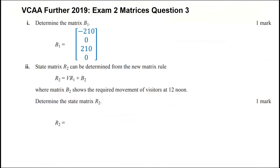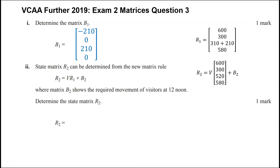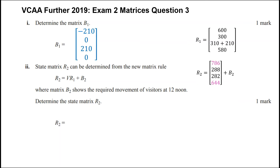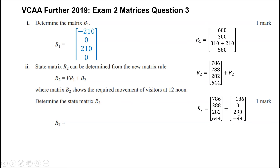In part 2, we go one step further and calculate state 2. We had state 1 and now apply the transition matrix again — multiplying it out on the CAS calculator. Then we consider what happens to people exceeding 600. Matrix B2 reflects that only 600 can stay in each location. In this case, two locations exceed 600 visitors: one with 786 and one with 644. So 186 need to move from the top row and 44 from the bottom row, giving 230 extra going to location G, and we compute state matrix R2 by adding those two matrices.